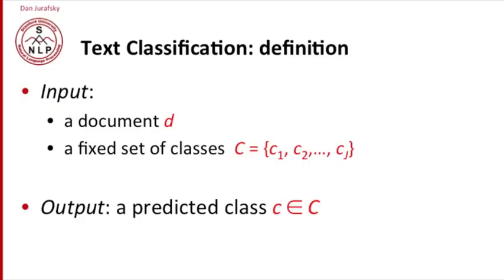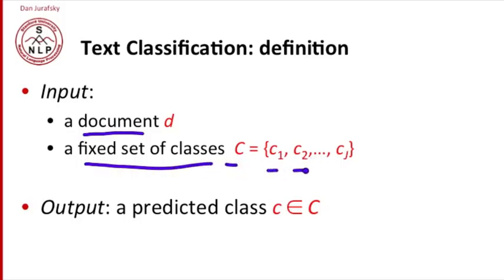Let's define the task of text classification formally. We have, as input, a document D and a fixed set of classes C with J classes: C1, C2, up to CJ. Given this document and this set of classes, our goal is to predict a class C from that set. So our job is to take a document and assign a class to that document.